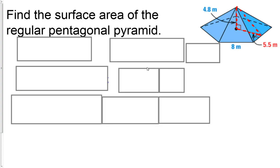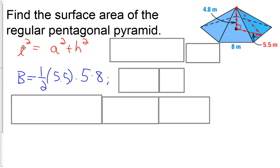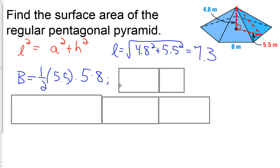Next, we've got one more of these. They gave us the height, they gave us, instead of half side, it's a little different here, they gave us the apothem. Now the height, apothem, and slant height form the right triangle this time. So we've got L squared equals A squared plus H squared. Plugging it in, square rooting, we get square root of 4.8 squared plus 5.5 squared gives us 7.3.